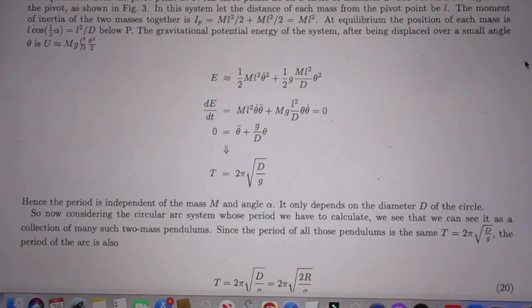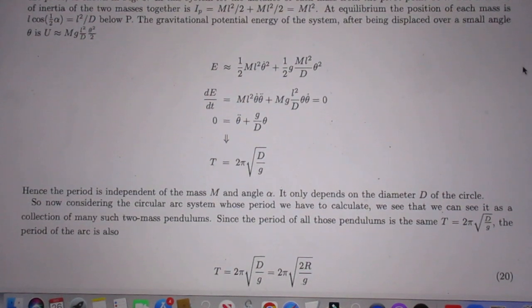So, in this system, let the distance of each mass from the pivot point be L. The moment of inertia of two masses together is I of P equals ML squared divided by 2 plus ML squared divided by 2 equals ML squared. At equilibrium, the position of each mass is L cosine one-half alpha, which equals L squared over D.